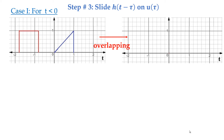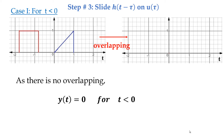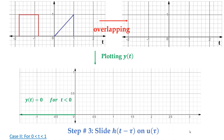Case one: for time t less than zero, you can see that there is no overlapping, so the output would be zero for time t less than zero. By plotting, we have a straight line along the time axis for time t less than zero.